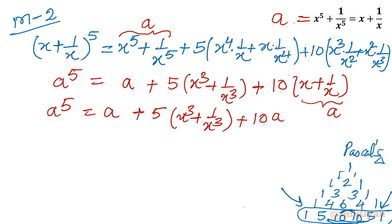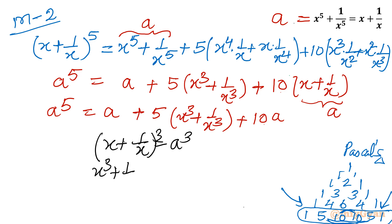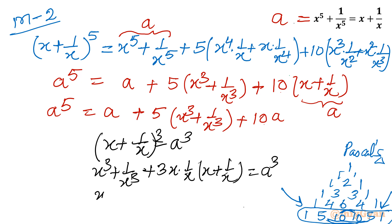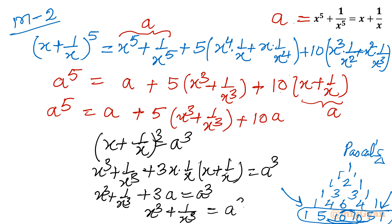So a power 5 equals a plus 5 times (x cube plus 1 over x cube) plus 10a. The only remaining problem is expressing x cube plus 1 over x cube in terms of a. Since x plus 1 over x equals a, we cube both sides. Using a cube plus b cube plus 3ab formula, we get x cube plus 1 over x cube plus 3 times (x times 1 over x) times (x plus 1 over x) equals a cube, which gives x cube plus 1 over x cube plus 3a equals a cube.